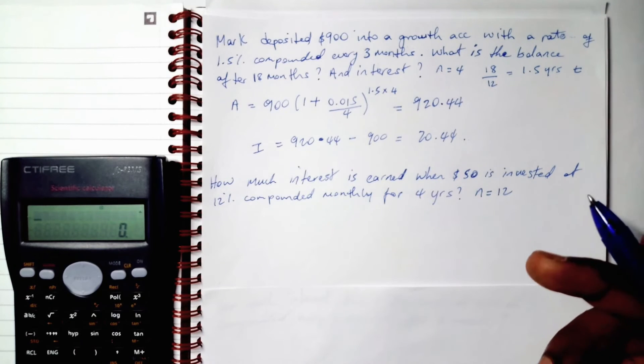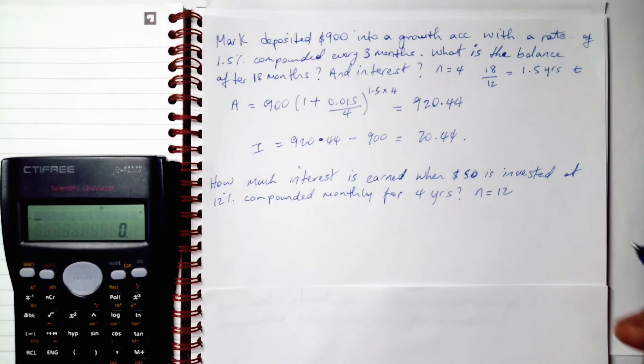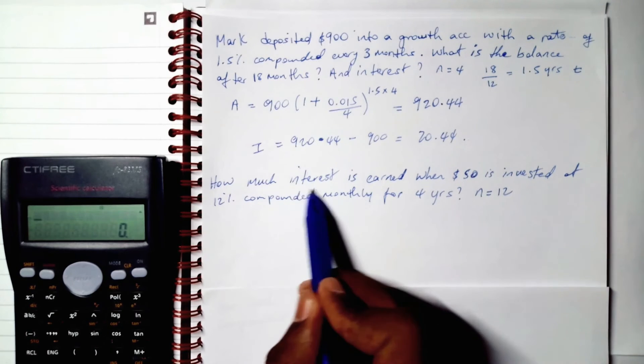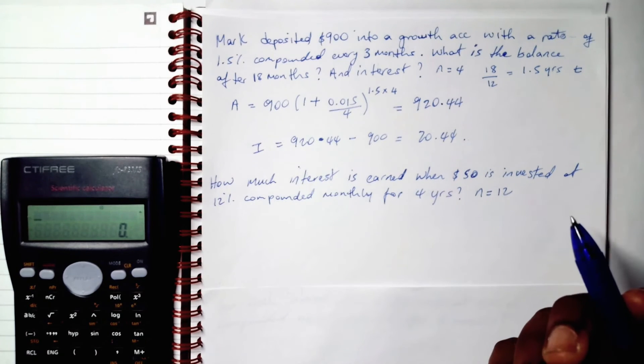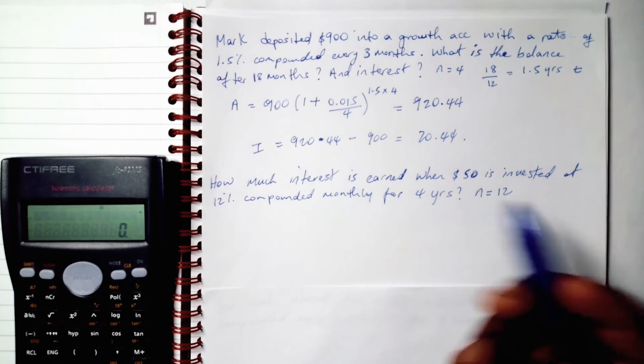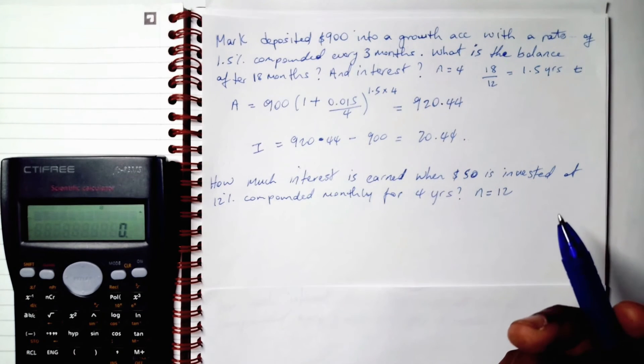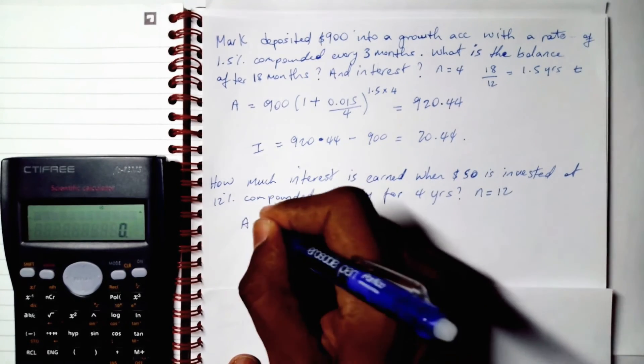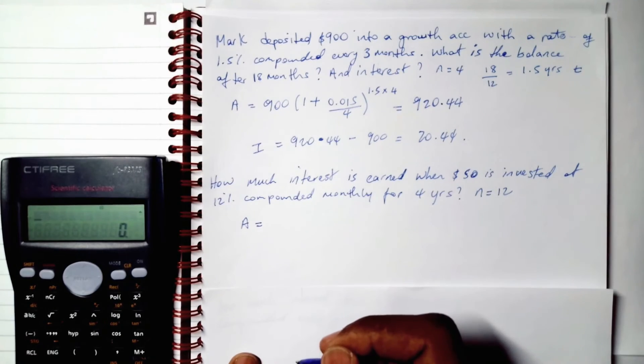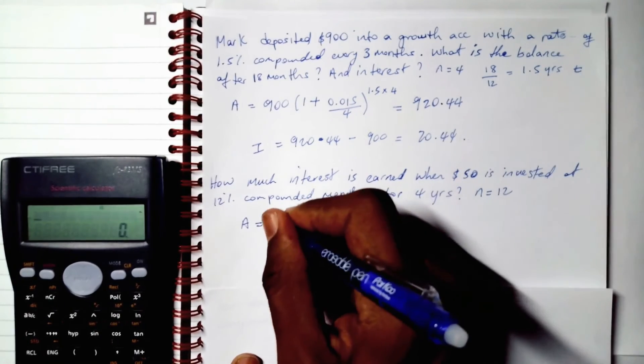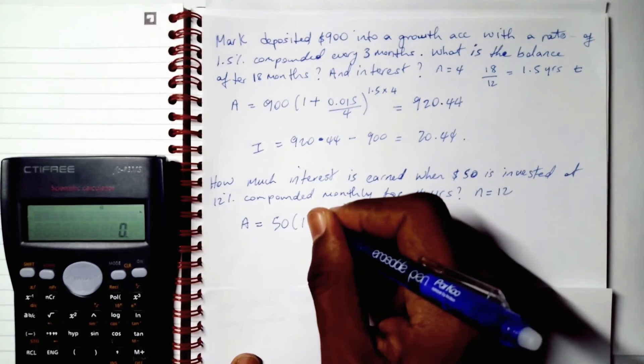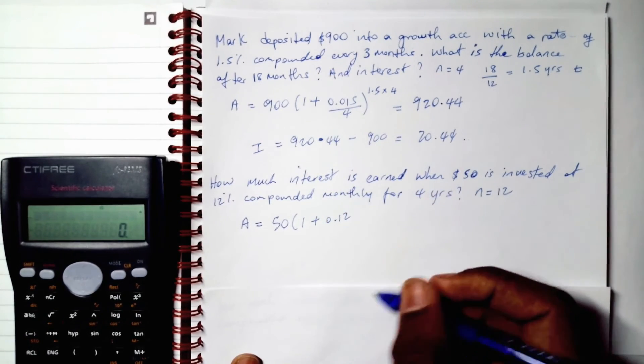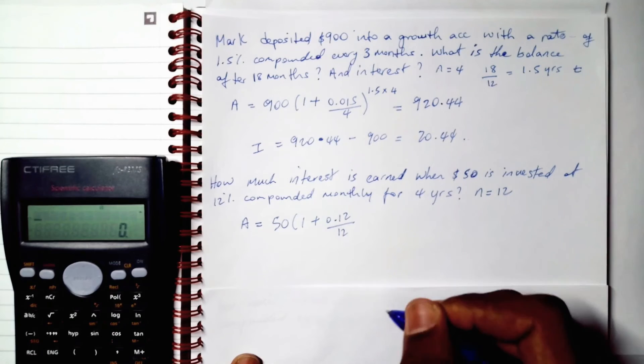We can now proceed with calculating our accumulated value, which we will then calculate our interest from. Interest. Because they want the interest. They didn't ask for the accumulated value. But we can't get to the interest without calculating the accumulated value when doing compound interest. So we calculate our A, which is our accumulated value, which is 50 multiplied by 1 plus 0.12 divided by 12. Voila.